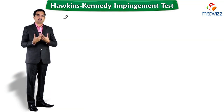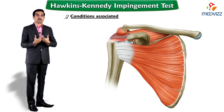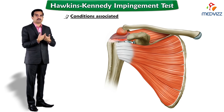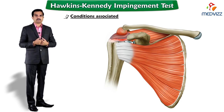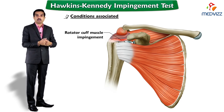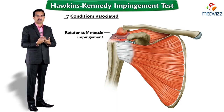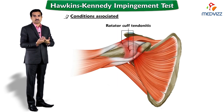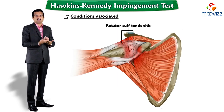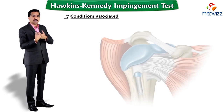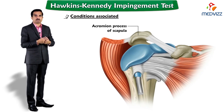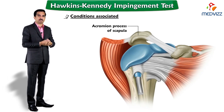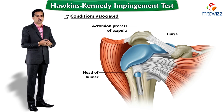Now let us talk about the conditions associated with a positive result of the test. Most often it will be rotator cuff muscle impingement — examples like supraspinatus, teres minor, and infraspinatus muscles — or rotator cuff tendonitis, where the tendons of the rotator cuff muscles pass through a narrow space between the acromion process of the scapula and the bursa of the head of the humerus.